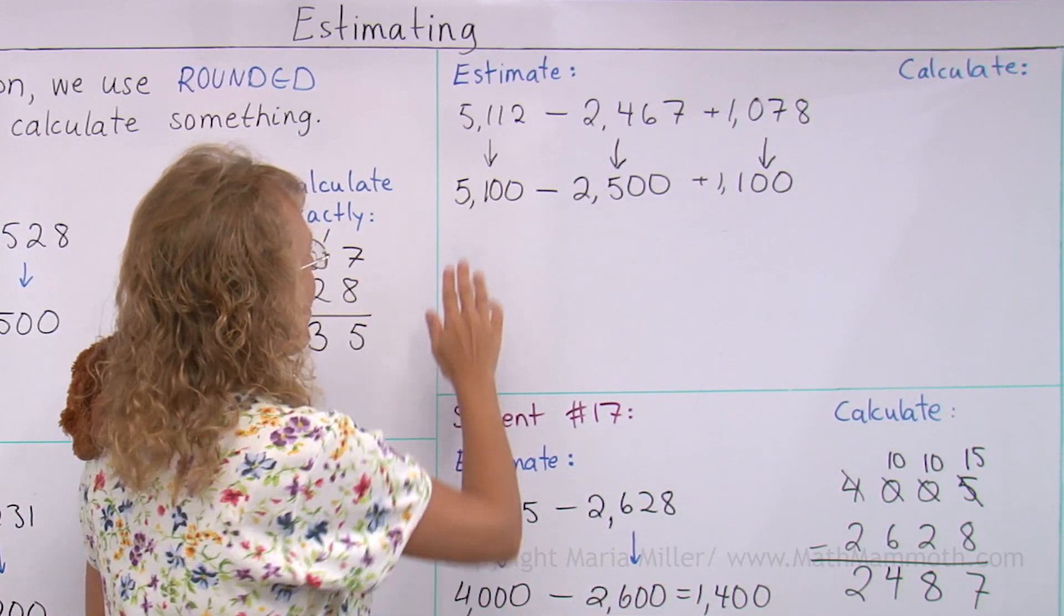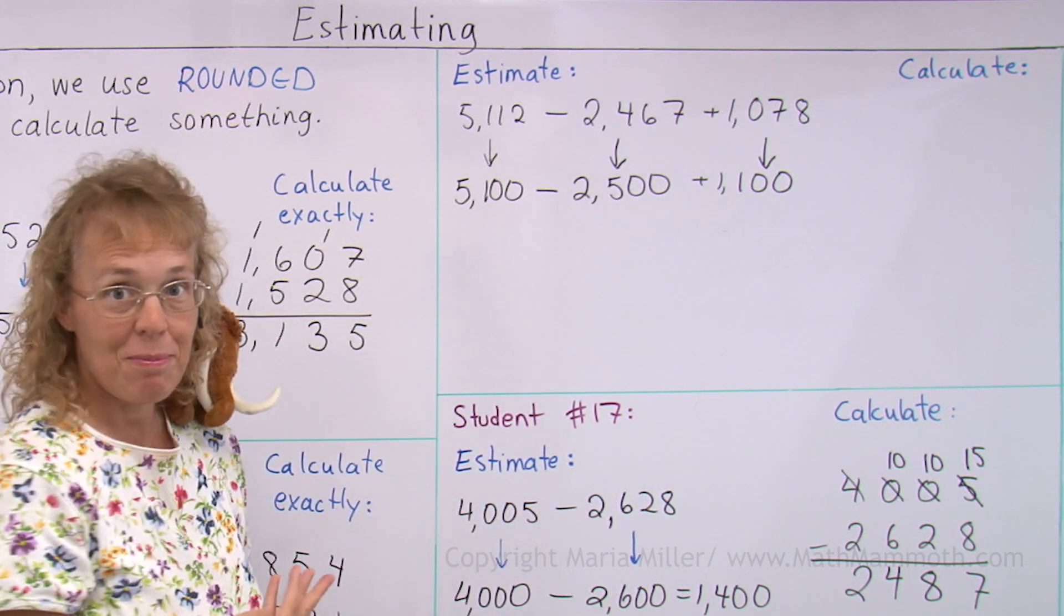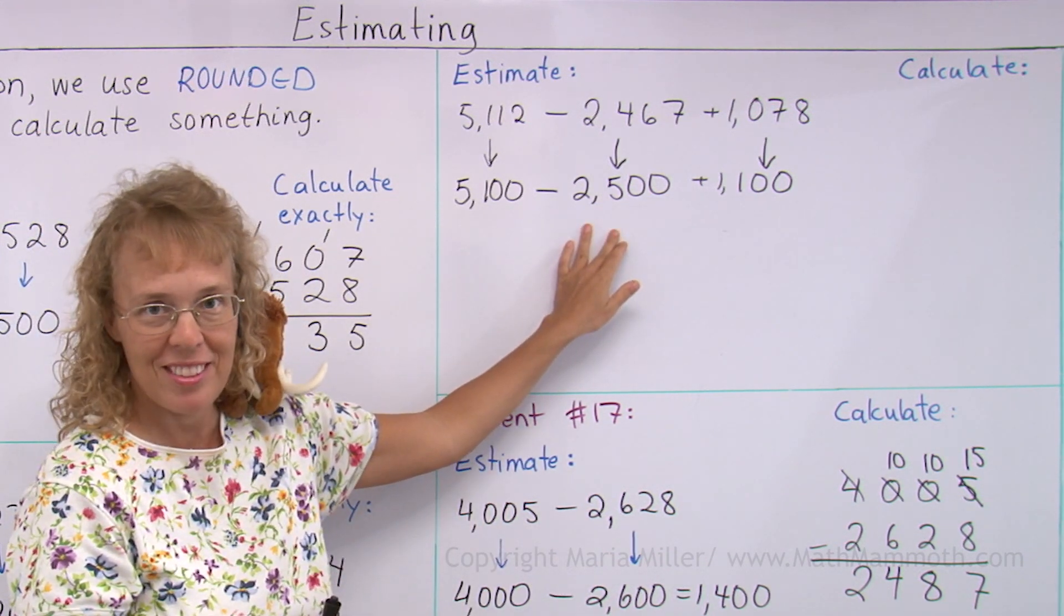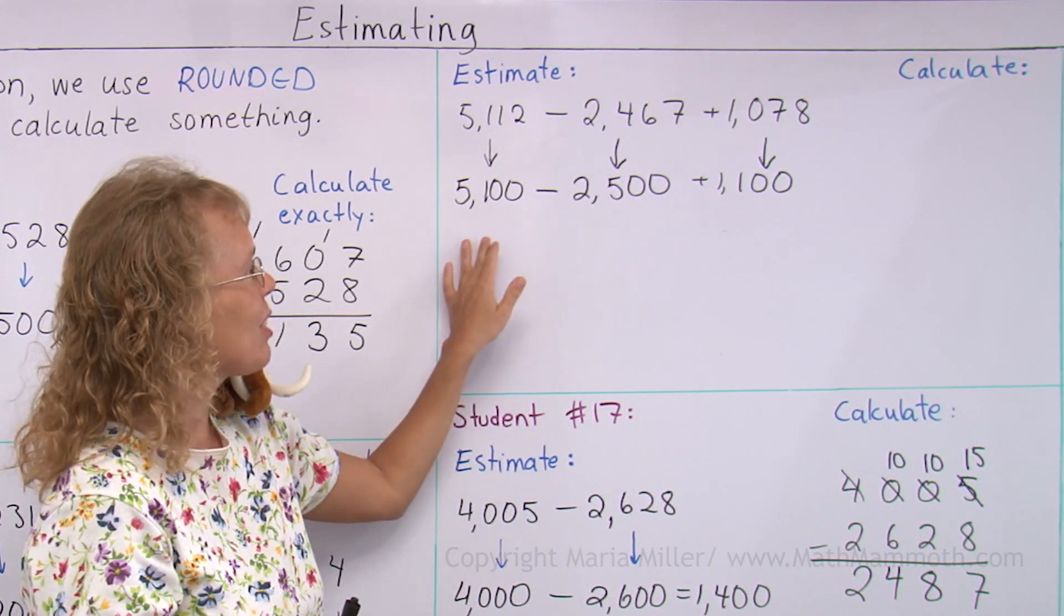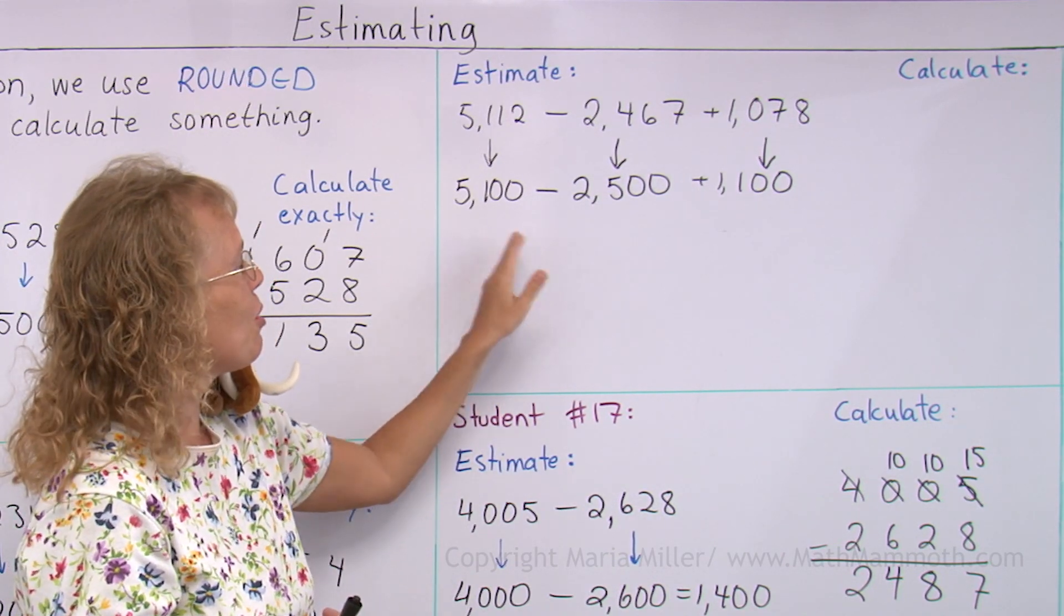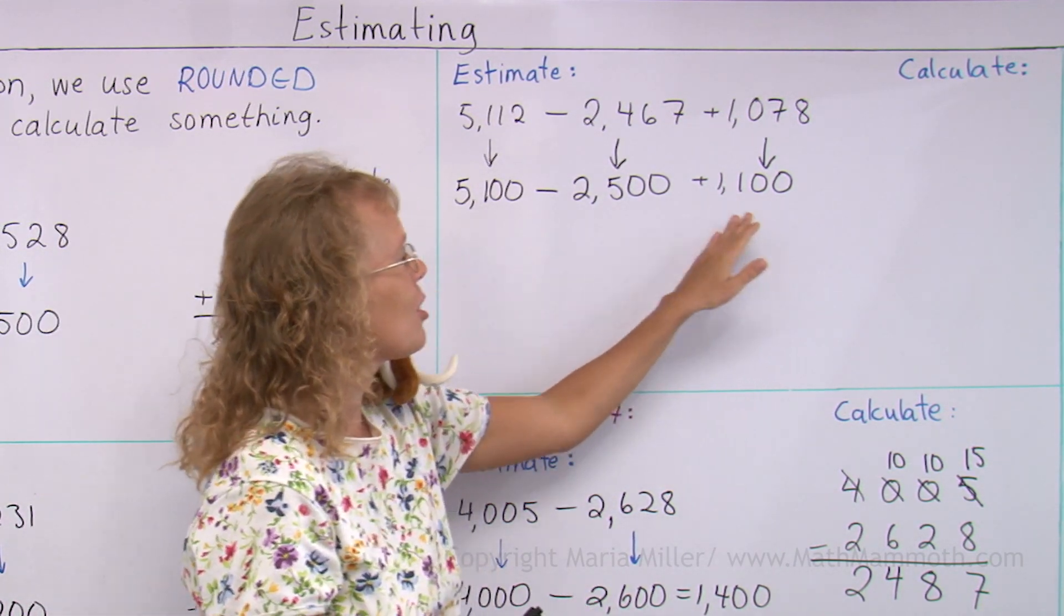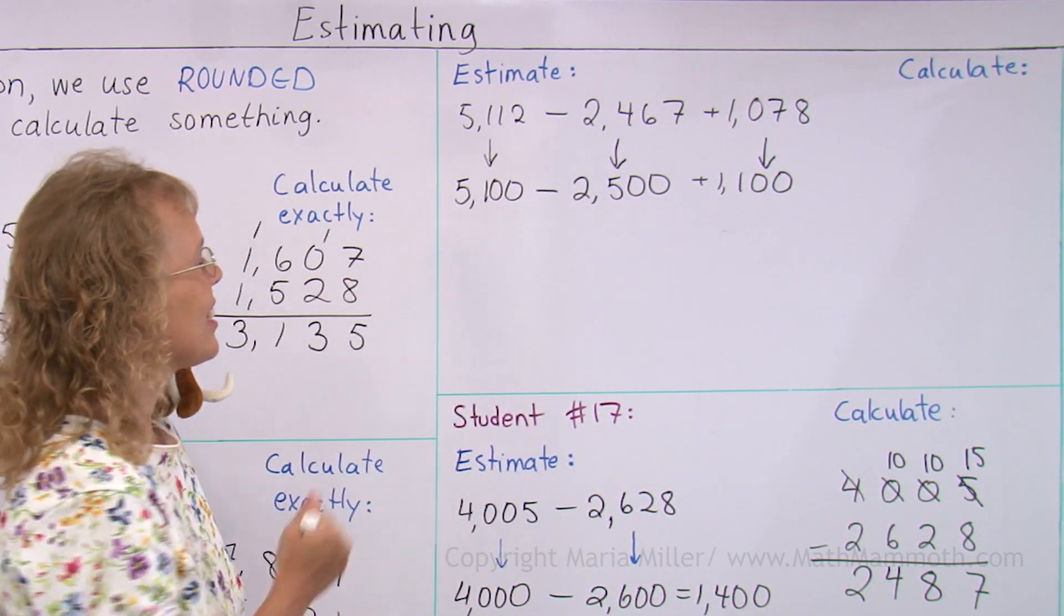Here, when I calculate mentally, I can think, for example, I can think of 51 minus 25, okay? That's 26, or 2,600. And then add to that 1,100, so we get 3,700.